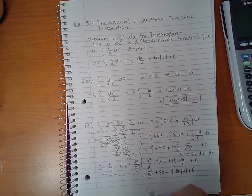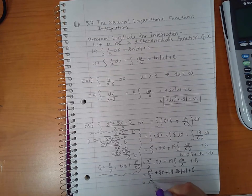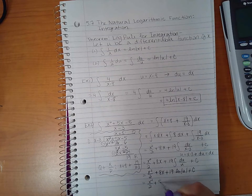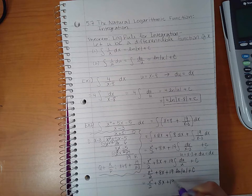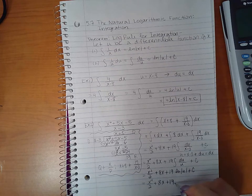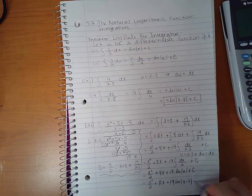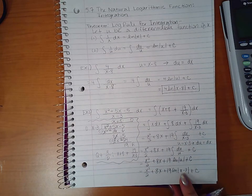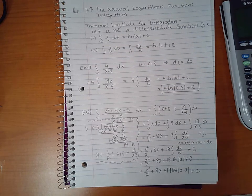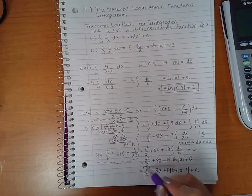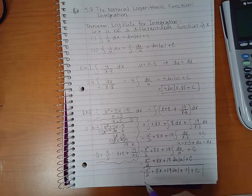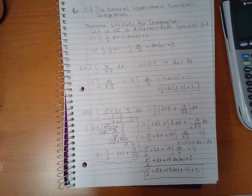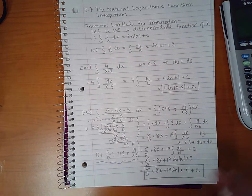Now we do have to back substitute, what is u? So u was x minus 3. And again, this expression here is not positive for every x, so we must leave the absolute value bars there. So we end up with this expression here as our final answer.